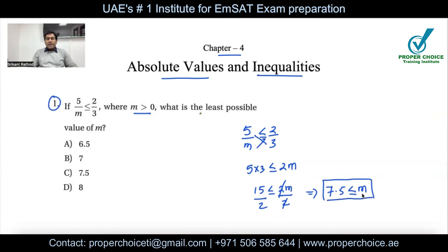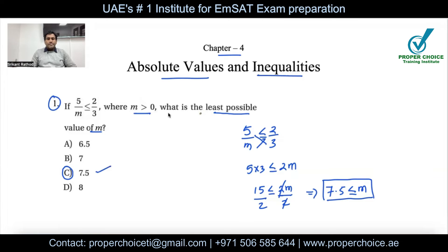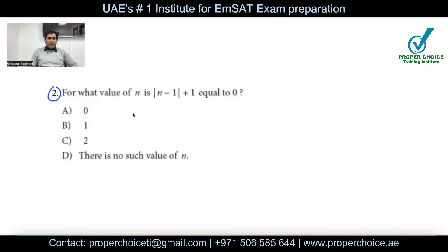So m is greater than or equal to 7.5 — it could be 7.5 and above, going to positive infinity. But the question asks for the least possible value of m, so the answer is 7.5, which is option C. If they had asked for a possible value, 7.5, 8, and so on are all correct — but for the least possible value, C is the right choice.